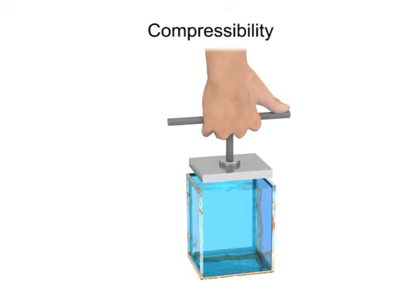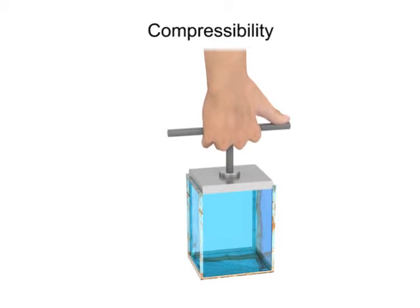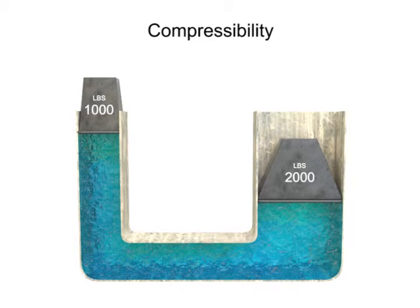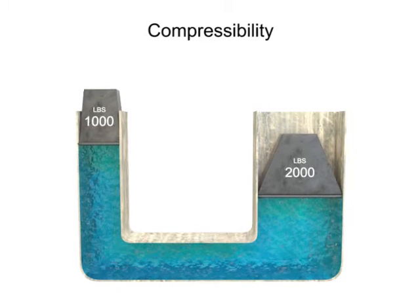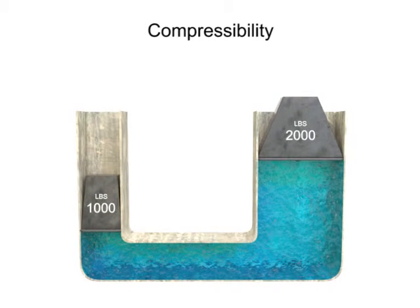Liquid fluids also have a compressibility factor. Water and petroleum-based hydraulic fluid are almost completely incompressible. They don't compress when put under pressure. This characteristic is what allows them to be used to transmit power in fluid systems.